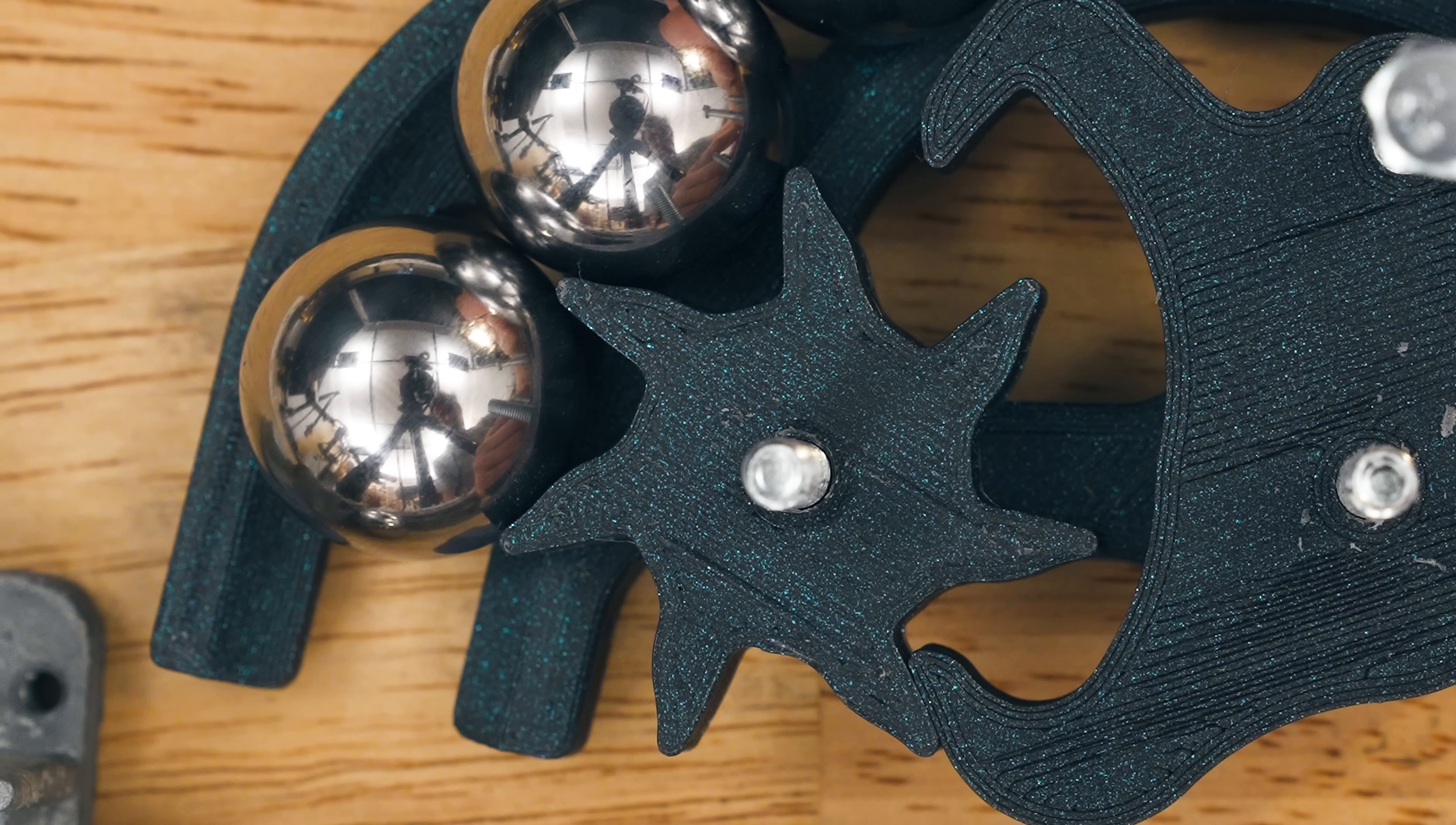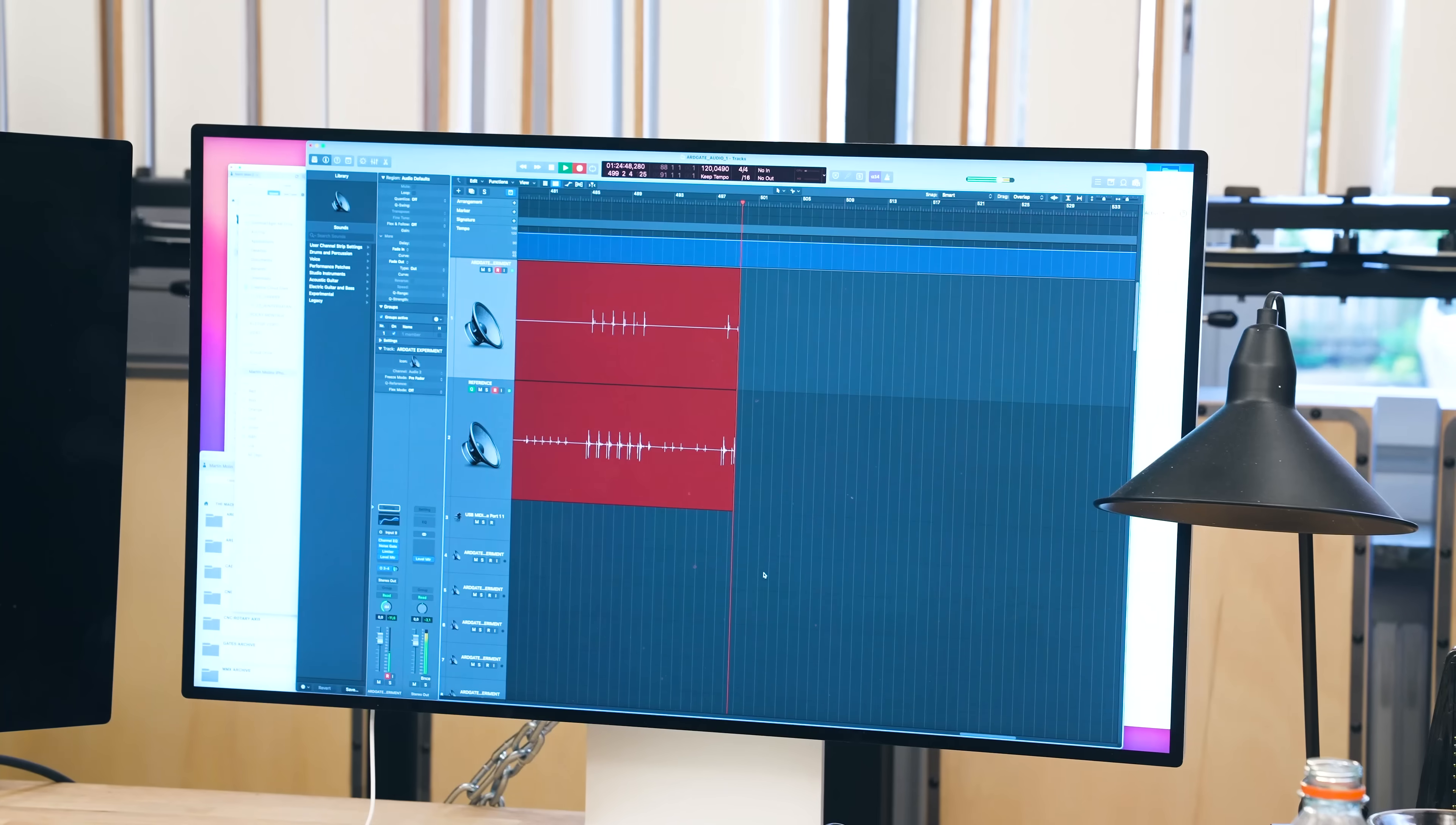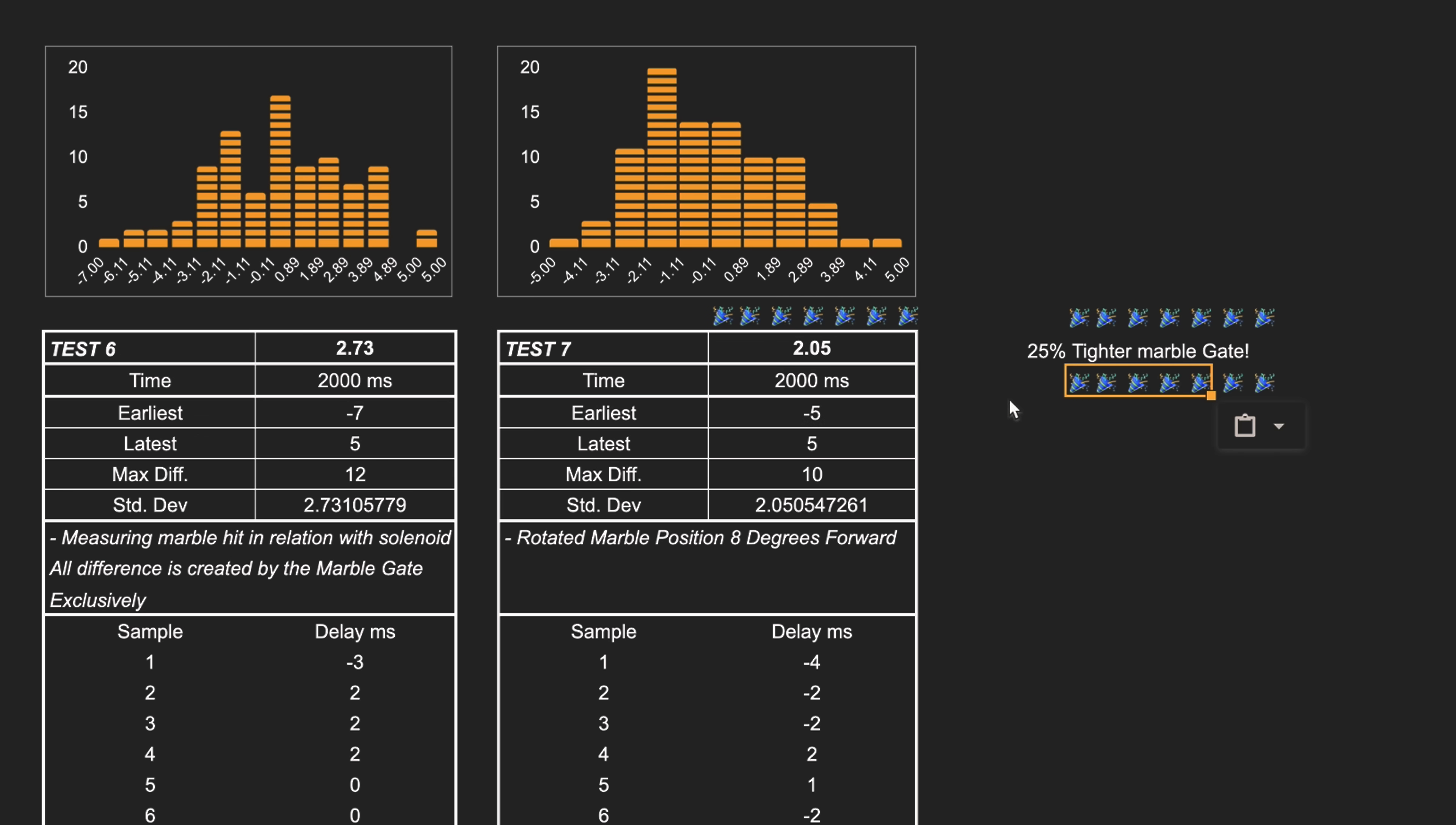So here you can see the difference in marble position. This one is the original zero degree position. And then I'm exchanging the escapement arm for the eight degree rotated forwards arm. And you can see that the marble is hanging lower. It's more ready to fall, so to speak. So now I can record a new test of 90 samples. And let's see if rotating the marble position eight degrees forward did anything to the inaccuracies and the standard deviation in milliseconds. And after compiling the data, we have 2.05 milliseconds standard deviation. Amazing result.